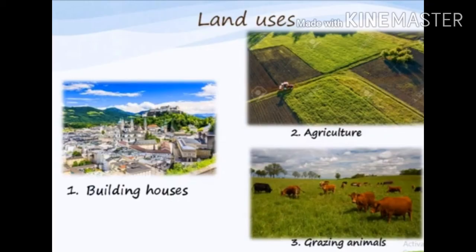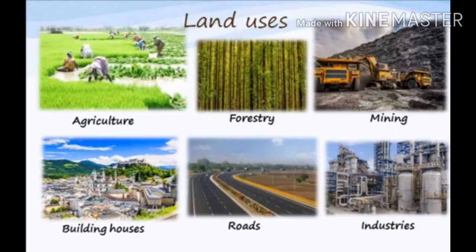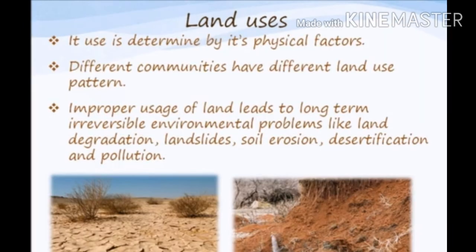Land is used for building houses, agriculture, grazing animals, mining, forestry, roads, and industries. Land use is determined by physical factors. But if we use land in an improper way, it won't be sustainable for the long term. Environmental problems start: landslides, soil erosion, degradation, and pollution.